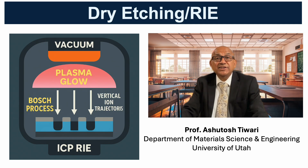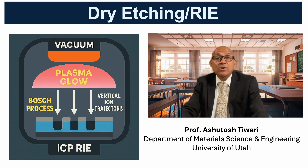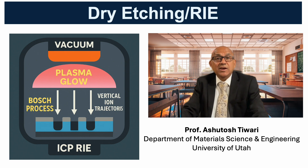Variants such as deep RIE, also known as the Bosch process, create high aspect ratio trenches, while inductively coupled plasma RIE allows higher plasma densities and precise depth control. Dry etching provides the resolution and verticality needed for integrated circuits, MEMS, and nanophotonic structures, though it involves high equipment cost and potential ion-induced damage.